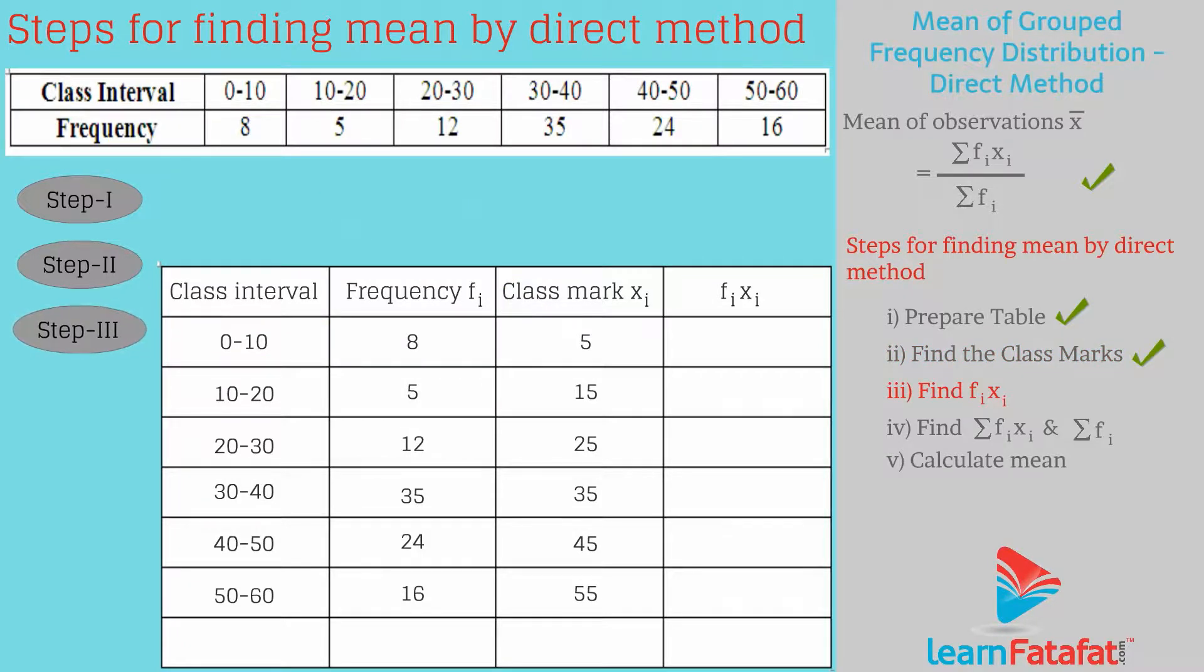Step 3: Find fixi of all rows. Multiplication of fi and xi gives values 40, 75, 300, 1225, 1080, 880.